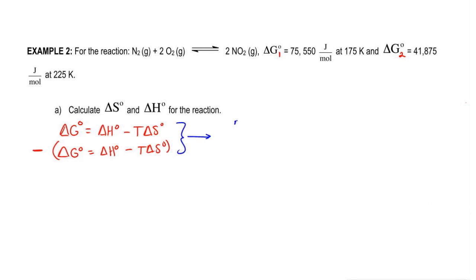We have 75,550 for one delta G and that equals delta H minus 175 Kelvin times delta S minus 41,875. Now remember, this negative gets distributed.